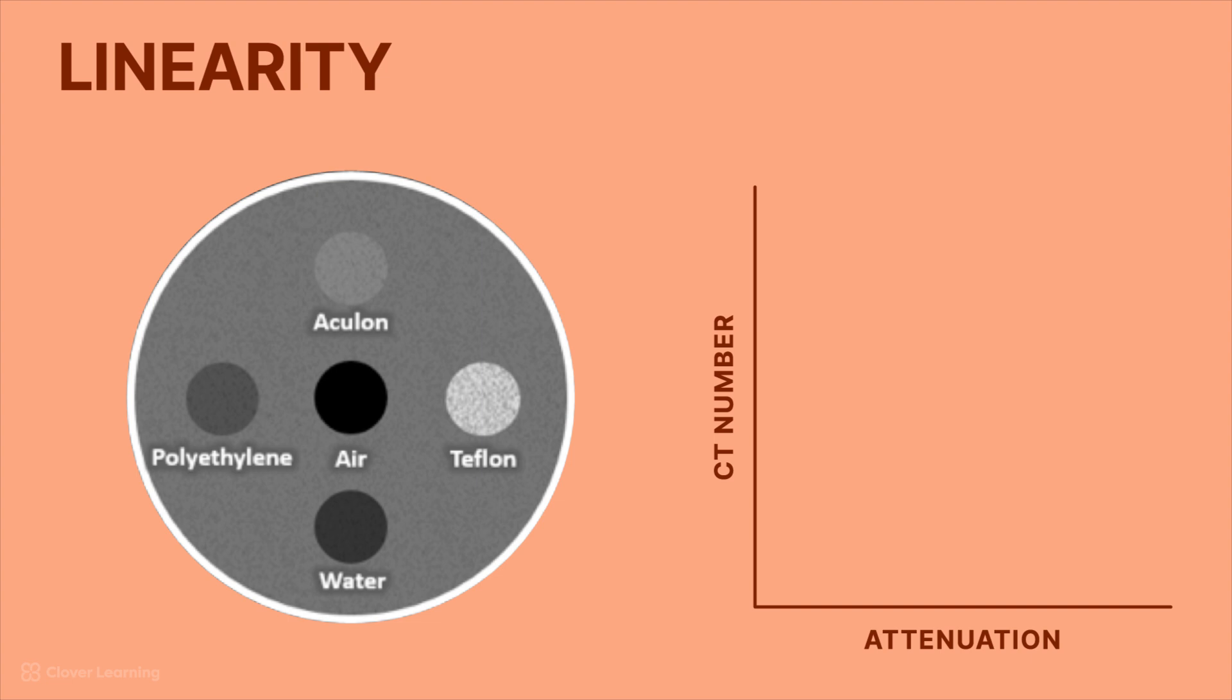As the attenuation of the x-ray beam increases, the CT number should increase by the same factor. And when we plot this relationship on the graph, we should get something that is very close to a line. And that's why it's called linearity.